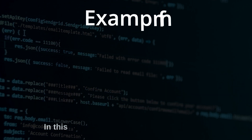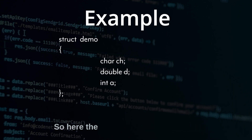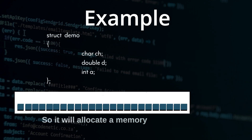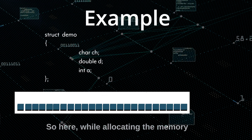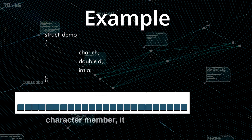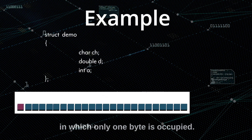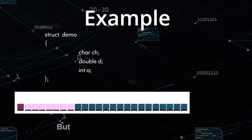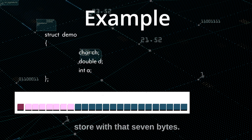Let us take another example. Here I have a character member, a double member, and an integer member. The largest member is double, so it will allocate memory as shown in this diagram. While allocating memory for the character member it accesses eight bytes of memory, in which only one byte is occupied and the remaining seven bytes are left empty.